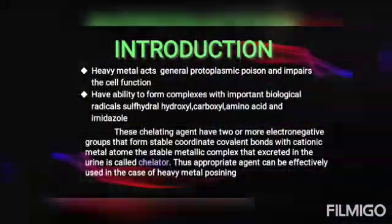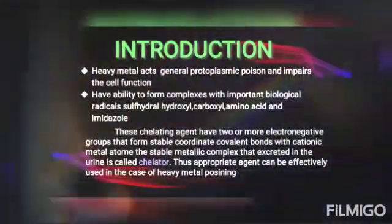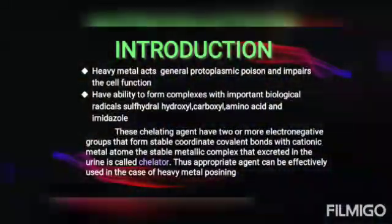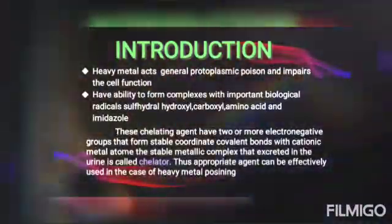Chelating agents have two or more electronegative groups. They form stable coordinate covalent bonds with a cationic metal atom present inside the cell, and they form a stable metallic complex. These stable metallic complexes are excreted in the urine. These are known as chelators. Thus, an appropriate chelating agent can be effectively used in the case of heavy metal poisoning.